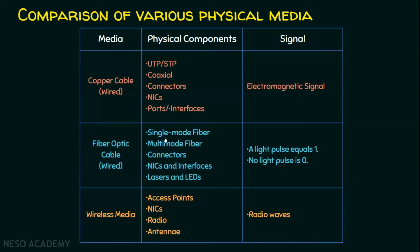For fiber optic cable, it can be a single-mode fiber or a multi-mode fiber. A single-mode fiber produces a single straight path for light, whereas a multi-mode fiber allows multiple paths for light, which means there can be dispersion. We also need connectors, NICs, and interfaces. For fiber optic cable, we need lasers or light emitting diodes as physical components, because here the signals are light signals, whereas copper cable uses electromagnetic signals. The signaling method is: a light pulse means one, and no light pulse means zero.